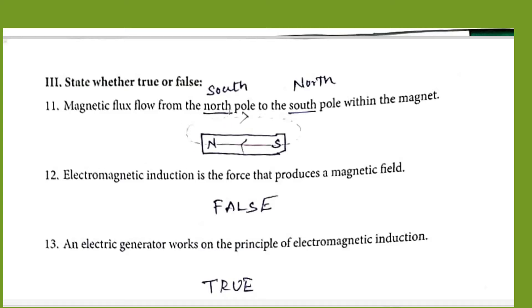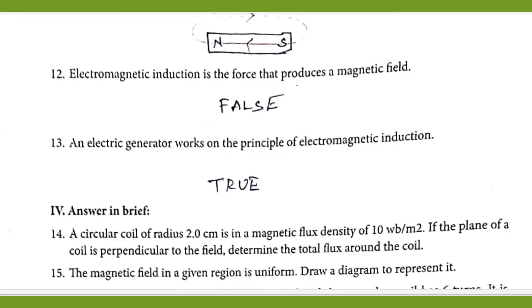Electromagnetic induction is the force that produces a magnetic field. This is false because electromagnetic induction is the force that produces a current, not magnetic field. An electric generator works on the principle of electromagnetic induction. This statement is true.